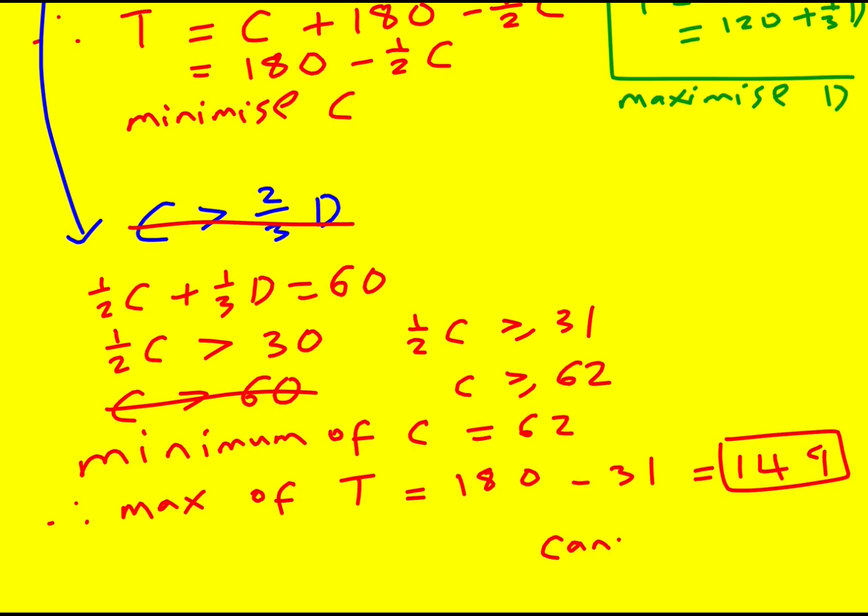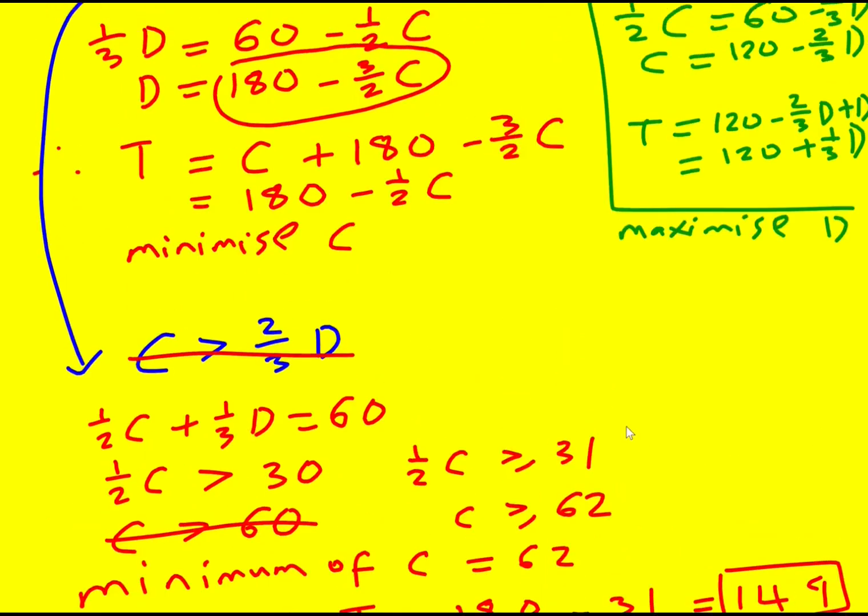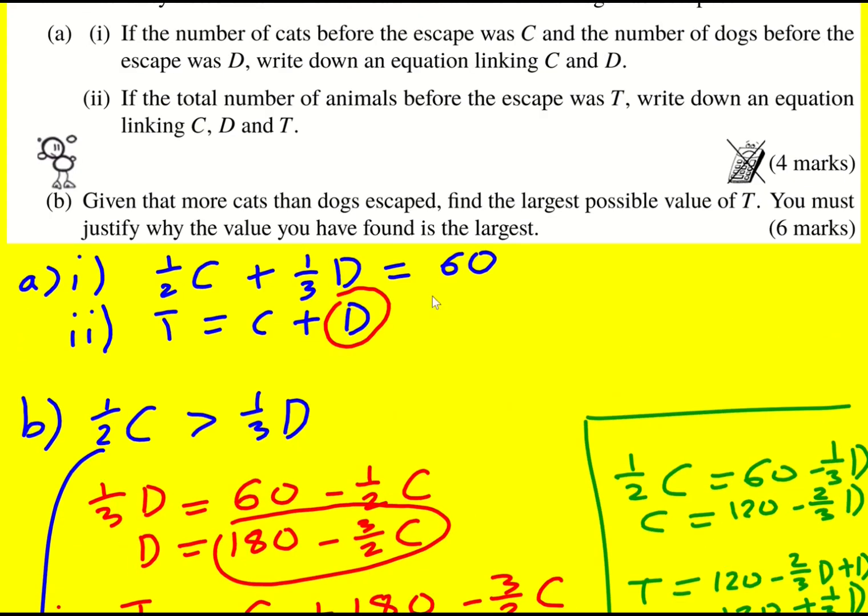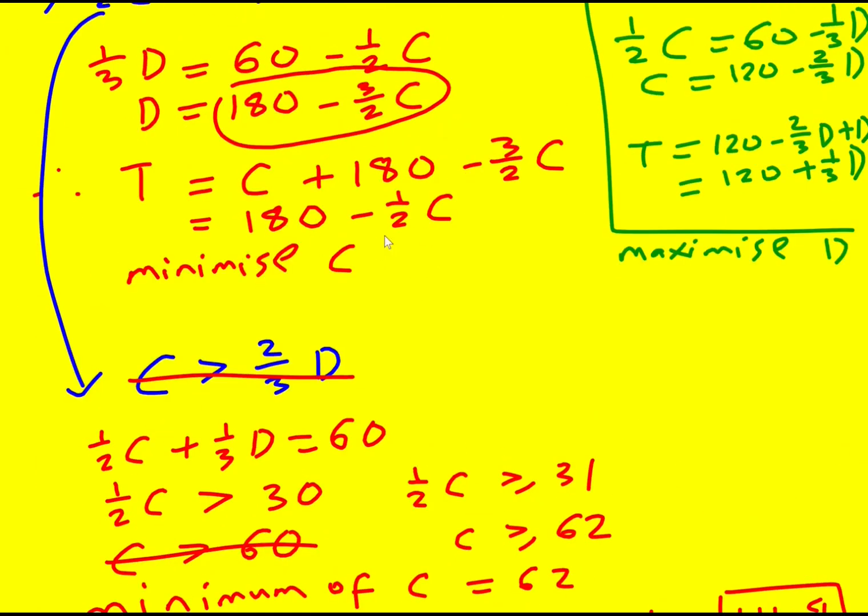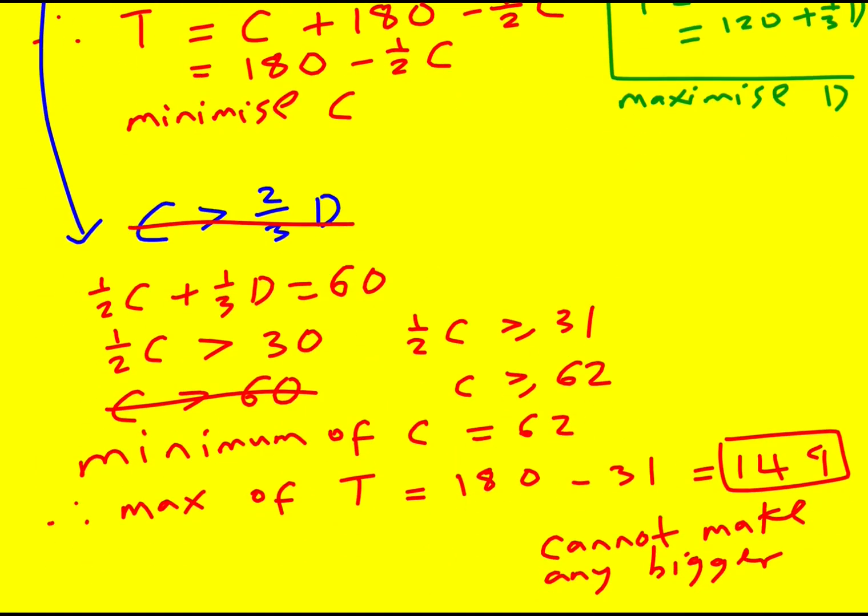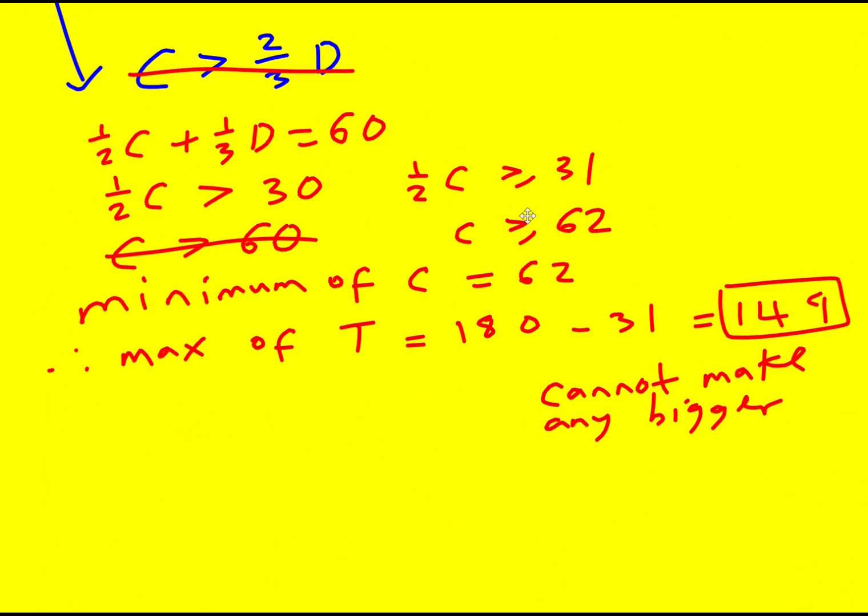So we cannot make T any bigger. I'm just writing that because it does say in the question you must justify why the value found is the largest. So I felt like I have, because I've explained C has to be greater than or equal to 62, therefore the minimum is 62, and that'll give us the maximum.